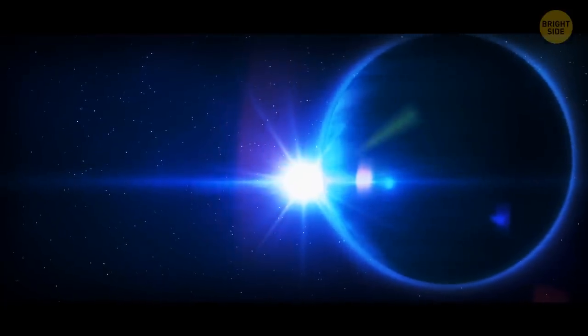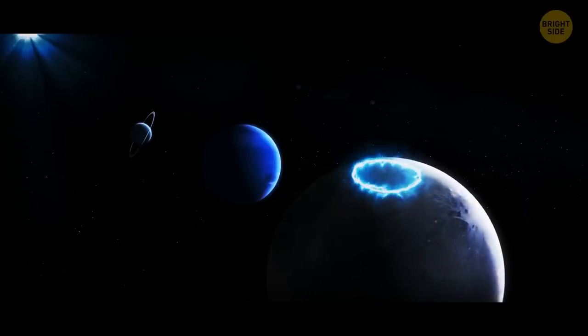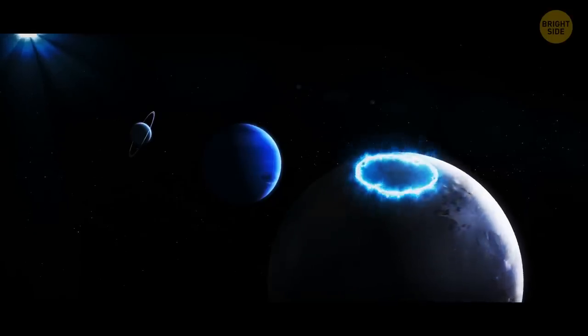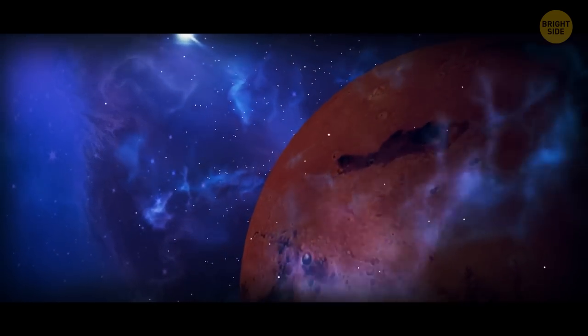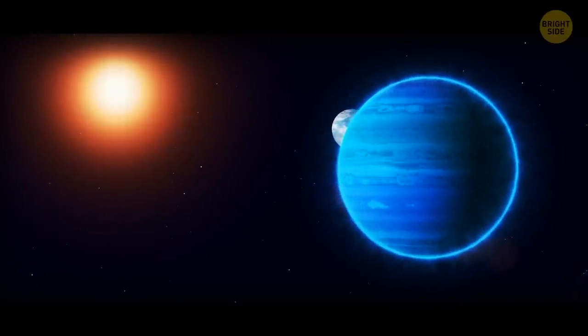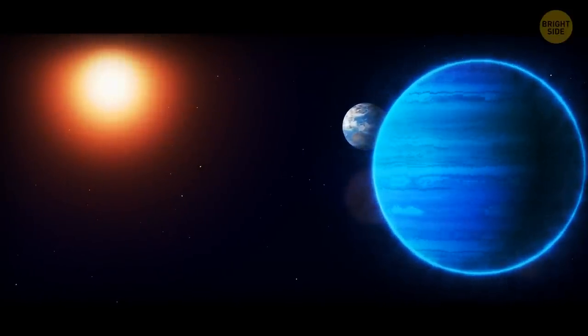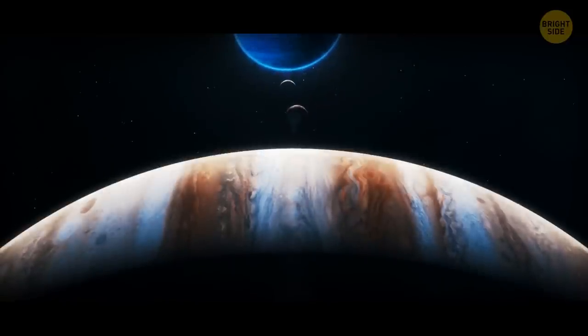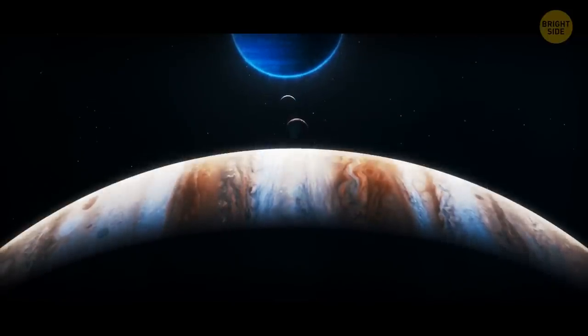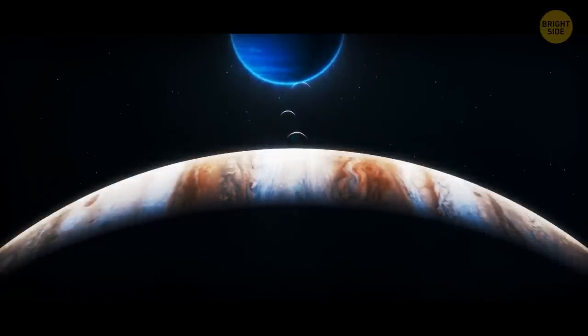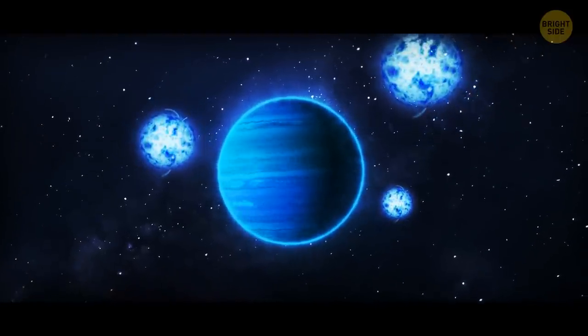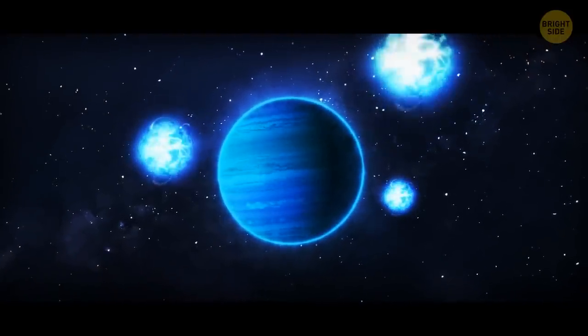Look at this. A rogue planet with auroras. Lost in space and drifting through galaxies, rogue planets were once flung away from their parent stars. But one of them, 200 light-years away from Earth, is different from the rest. It's a planet-sized object with a magnetic field 200 times stronger than that of Jupiter. This field is so powerful that it generates flashing auroras in the planet's atmosphere.